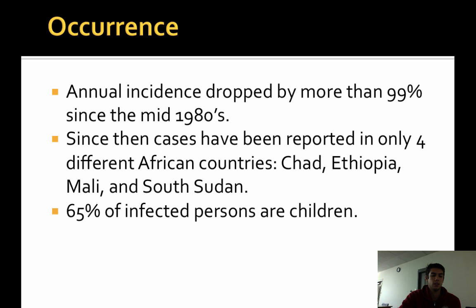There has been a drastic drop since the 1980s — a drop of more than 99% — which has left only the countries of Chad, Ethiopia, Mali, and South Sudan with remaining cases. Additionally, 65% of infected persons are children, which is probably because in these countries, the task of transporting water is left to children, creating a higher percentage of contact with possibly infected water sources.